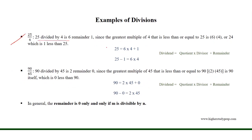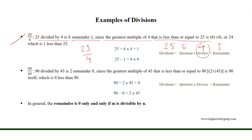25 divided by 4 is 6 remainder 1. Since the greatest multiple of 4 that is less than or equal to 25 is 6 times 4, or 24, which is 1 less than 25, as 6 times 4 equals 24.